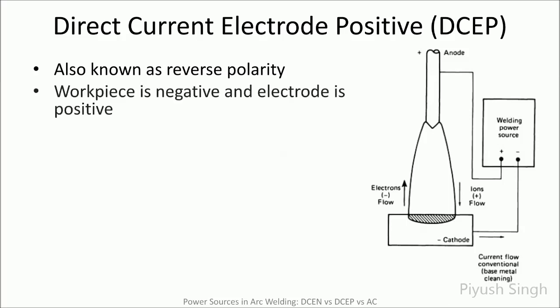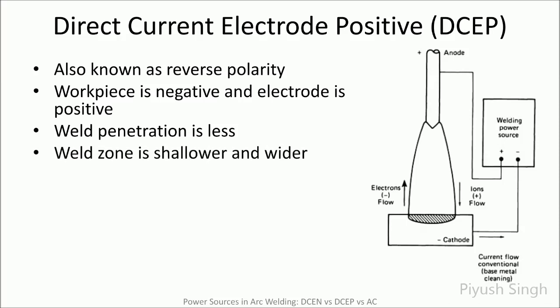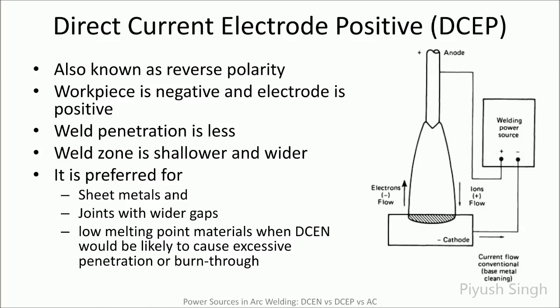Direct current electrode positive, DCEP, is also known as reverse polarity. In this case, the electrode becomes the anode and greater heat is generated there. DCEP is used for removing an oxide film from the surface of the weld pool or workpiece. The oxide film promotes emission of electrons when the workpiece is at negative polarity. As the oxide is depleted, the emission moves to a new location that has a high enough oxide content to sustain the discharge of electrons. This phenomenon is known as oxide cleaning. The arc root or cathode spot where the emission occurs is highly mobile in AC or DCEP, and as a result the arc is much less stable than in DCEN. This is also the reason for the wider weld zone. The penetration is low as more heat is concentrated at the electrode, making the process more suitable for thin sheets and joints with wider gaps.